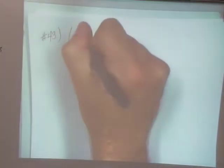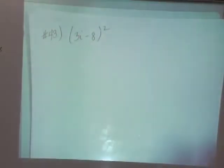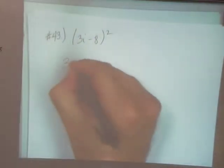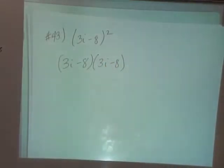43. So I'm squaring three I minus eight. So I'm going to go ahead and write it out twice. Now I'm gonna foil.